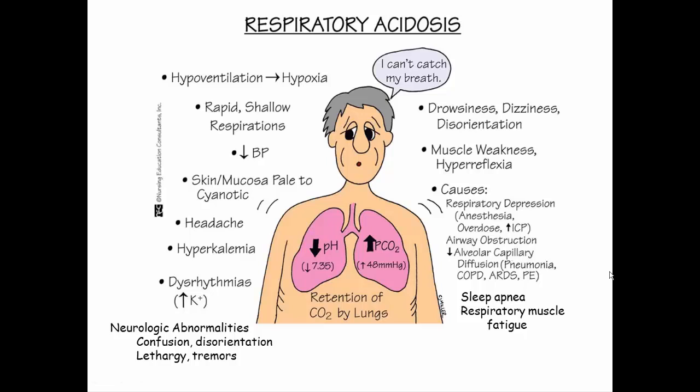Next is respiratory acidosis, which involves a problem with the respiratory system — the patient can't breathe adequately. Causes include respiratory depression from anesthesia or overdose, intracranial pressure increases affecting respiratory centers in the medulla, or anything affecting the airways such as obstructions or decreased alveolar-capillary diffusion. Conditions like pneumonia, COPD, adult respiratory distress syndrome, or pulmonary embolisms reduce gas exchange, raising CO2 levels. Sleep apnea and respiratory muscle fatigue are also causes.